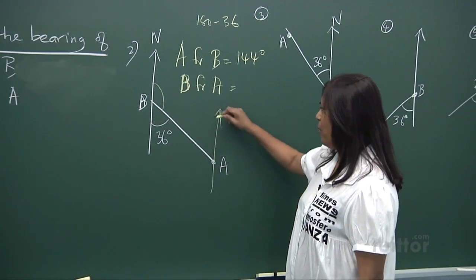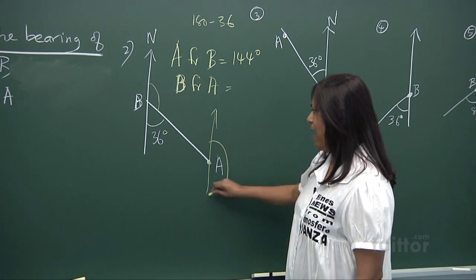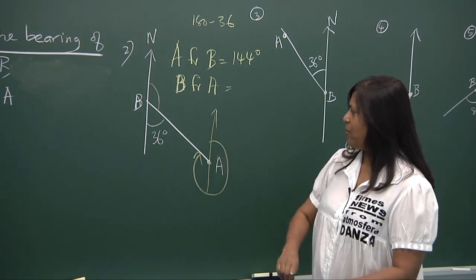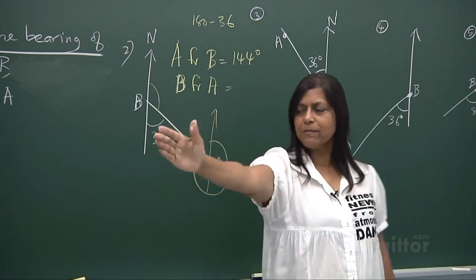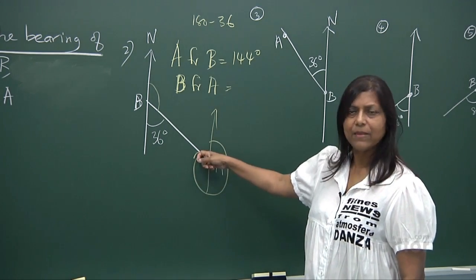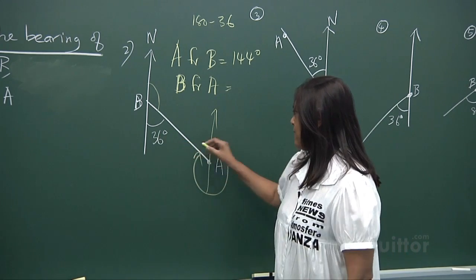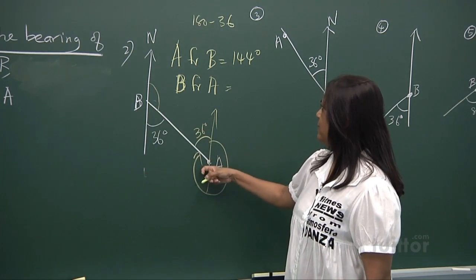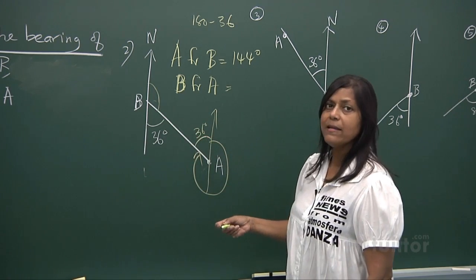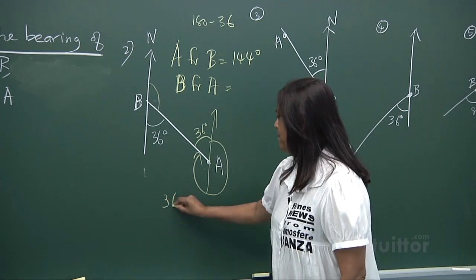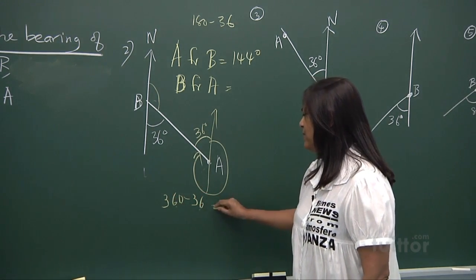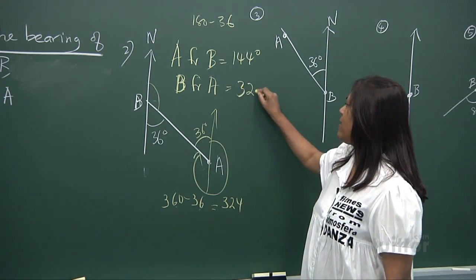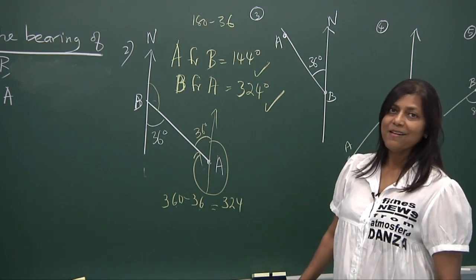From A, you always go north, then move towards B. Looking at this angle — because of parallel lines and alternate angles, this angle is also 36 degrees. So it's 360 minus 36. Calculate: 360 minus 30 is 330, then 330 minus 6 is 324. So the bearing of B from A is 324 degrees.